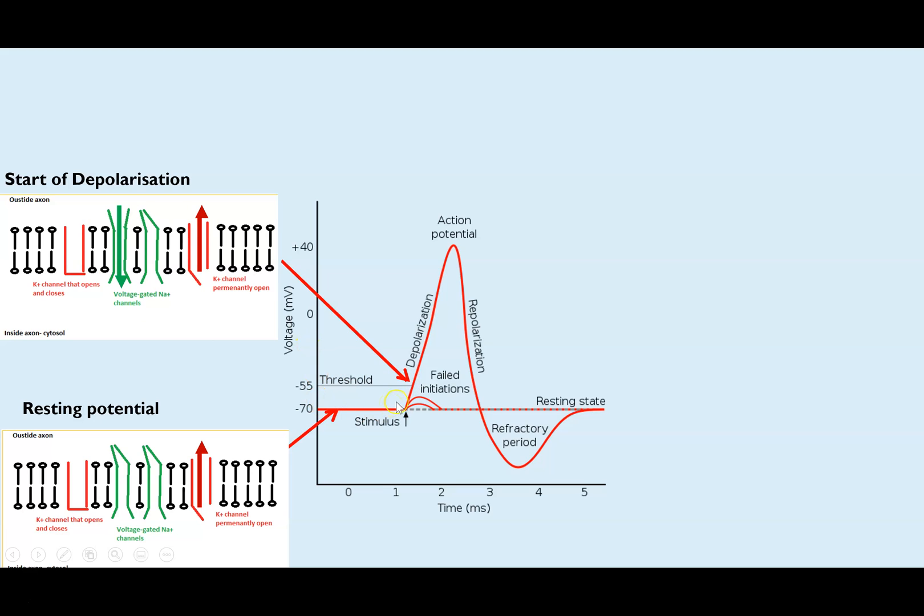Now, if you get above minus 55 millivolts, that is the threshold, that will then provide even more energy to enable more of these voltage-gated sodium ion channels to open. So as a result, we have even more sodium ions diffusing in, and we have the same quantity of potassium ions diffusing out. So we get this sharp increase in voltage, or depolarization.